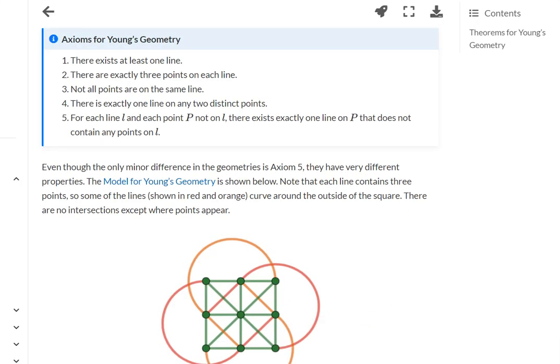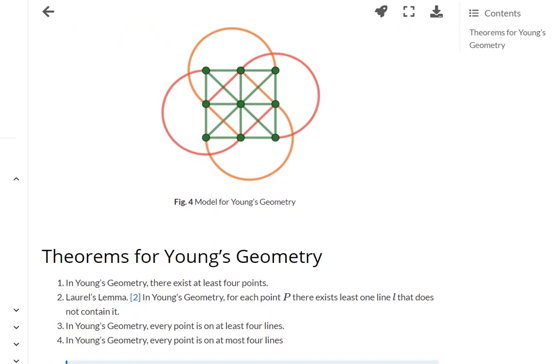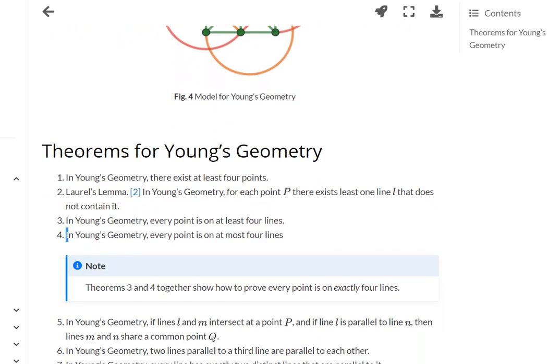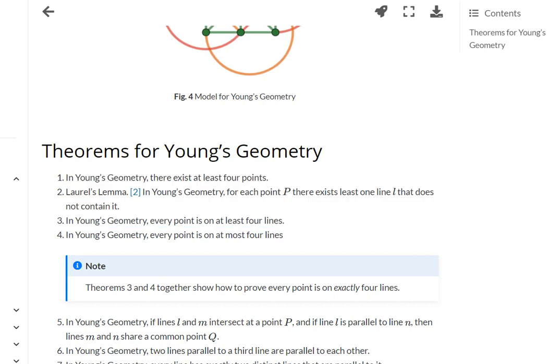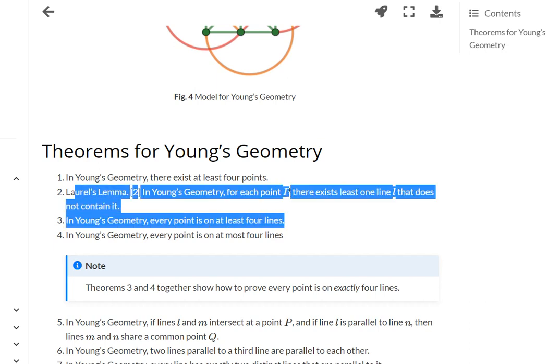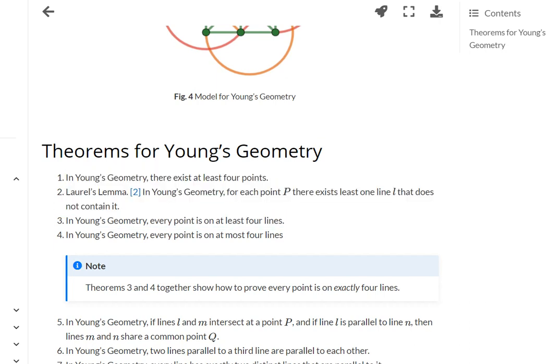Let me bring this up. This is an important point: I'm allowed to use the axioms. When I'm proving a theorem, like theorem four, I'm allowed to use any theorem that's above it in the list. That's how axiomatics work. I have to go in order and I can use any theorem above it and any axiom.